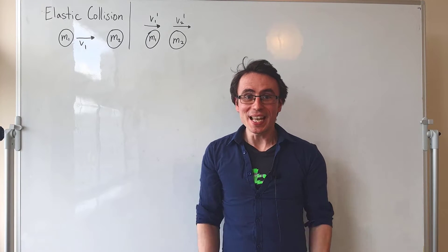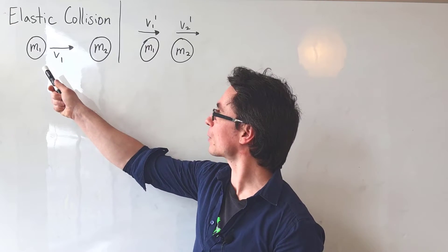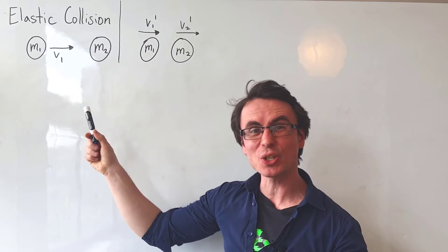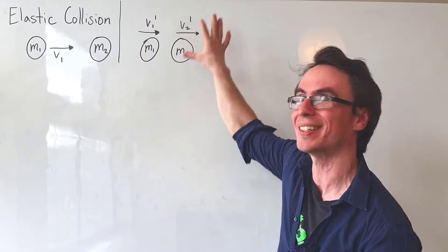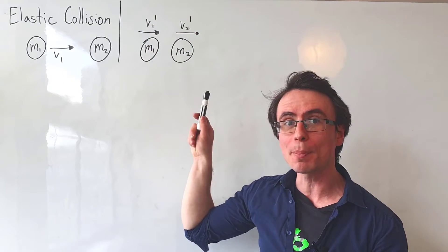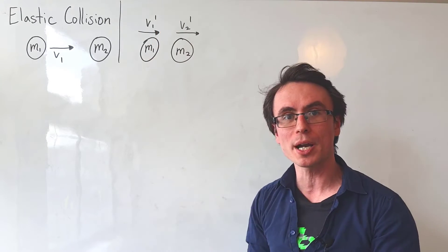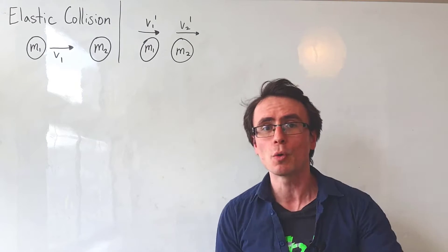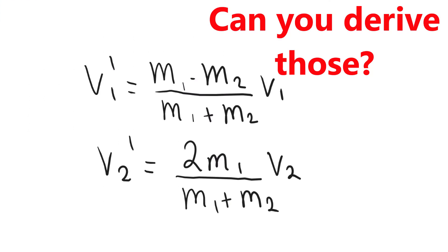Let's talk about elastic collisions in physics. Here is a simple problem with not such a simple solution. We have a mass initially moving at speed v1 traveling towards a stationary particle with no speed. After the collision, both particles are moving in the same direction: v1 prime is the final speed of the initial particle, and v2 prime is the final speed of the second mass. Can we find expressions for the final speed of both particles?